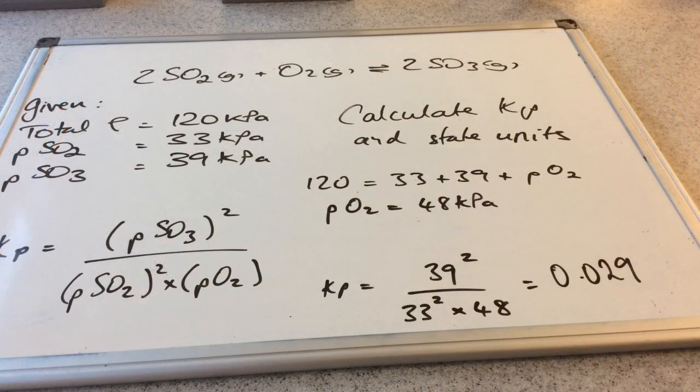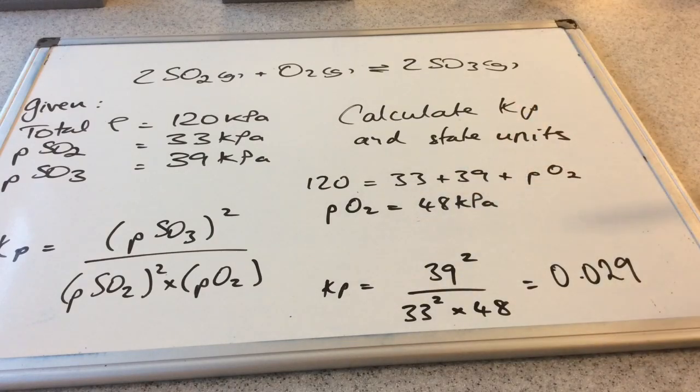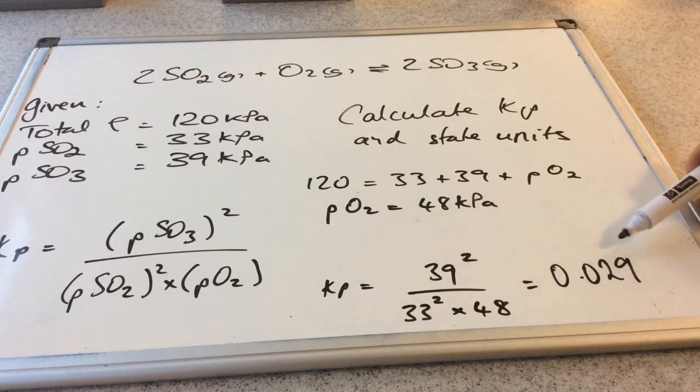So now we know all the partial pressures, we can substitute their values into the KP expression. So you can see I've done that there. And that gives me a numerical value for KP at 0.029.